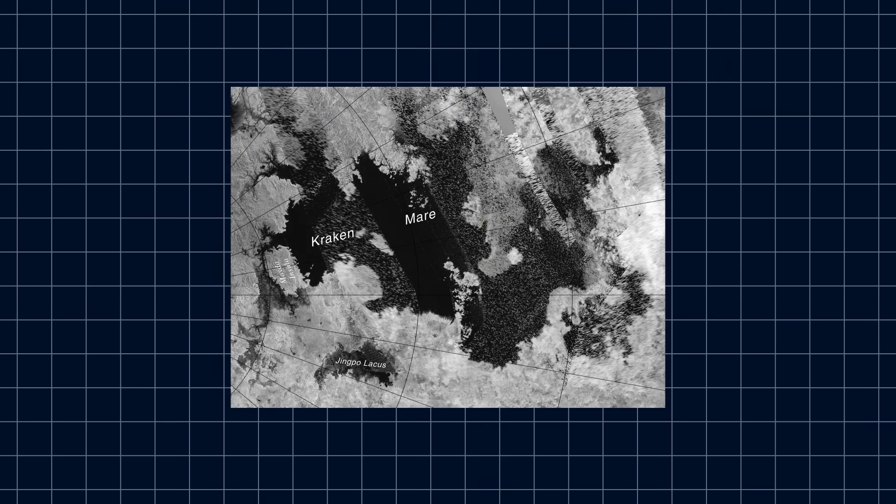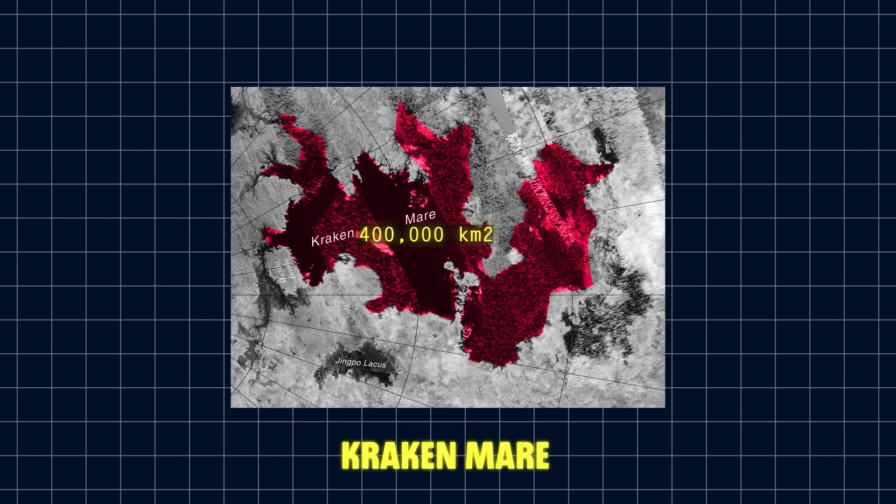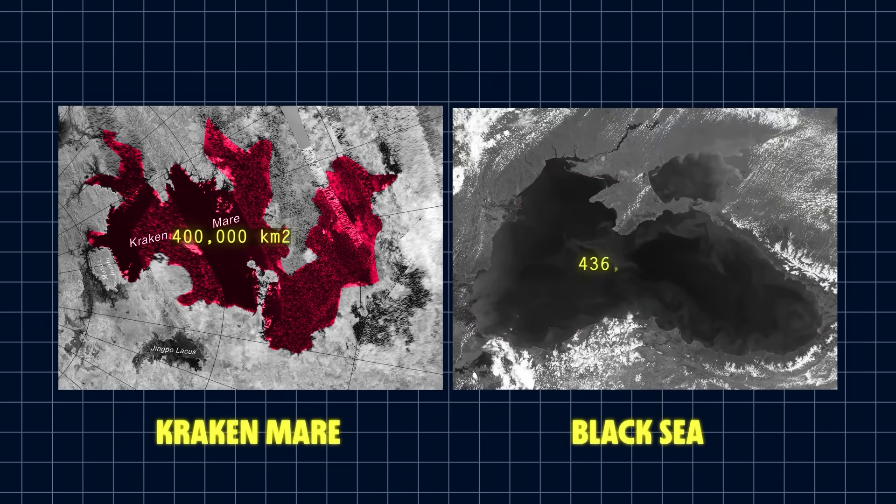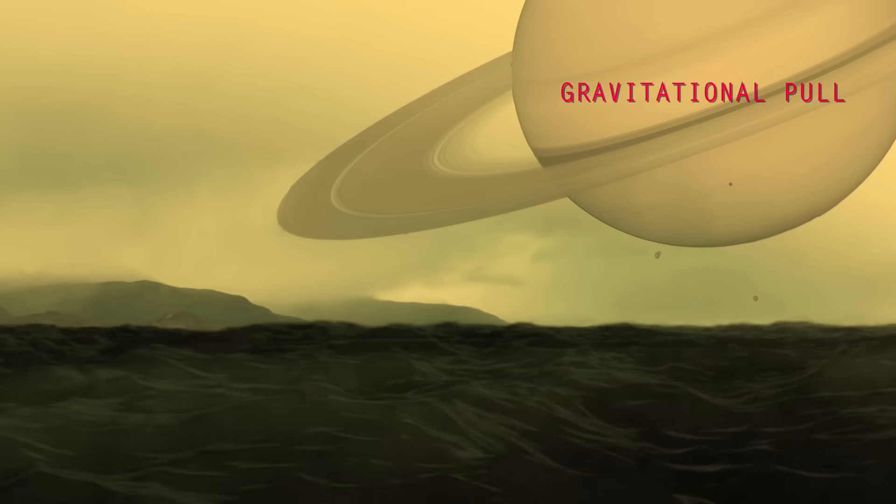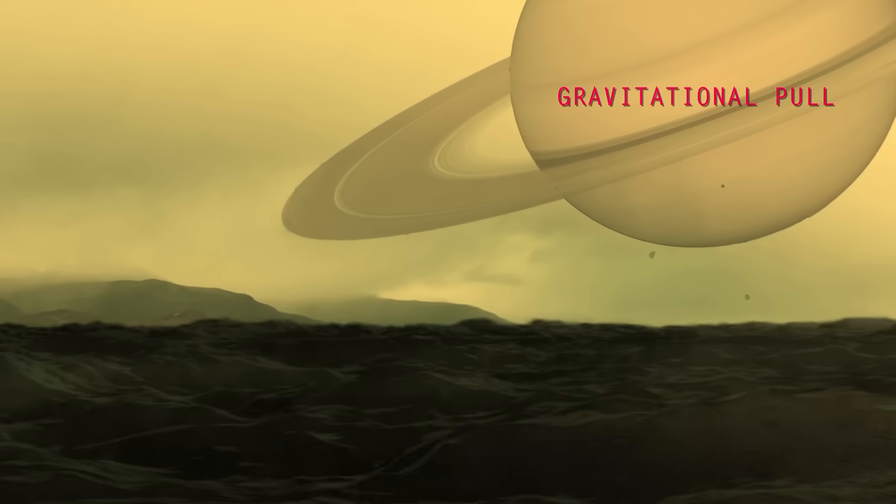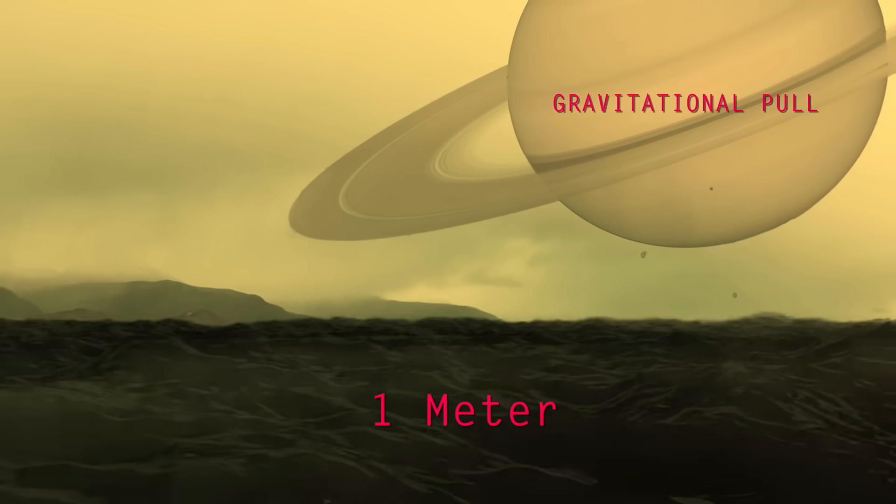Titan even has a small ocean at its North Pole. This body is known as Kraken Mare. It's 400,000 square kilometers in area, just a bit smaller than the Black Sea on Earth, large enough that it actually experiences a tide from the gravitational pull of the nearby planet Saturn, with the liquid methane rising and falling up to 1 meter.